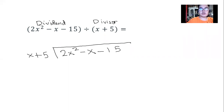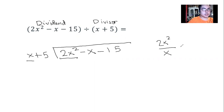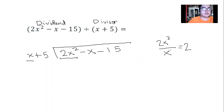Before we divide, we identify the first term of each group. The first term of the dividend is 2x squared, and for the divisor it is x. So we find the quotient of the first terms: 2x squared divided by x. Since 2 is the only number, we bring down the 2, then apply the quotient law of exponents — subtract the exponents — giving us 2x.